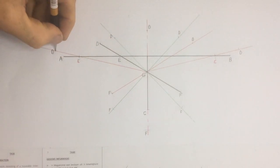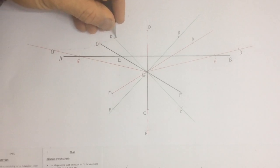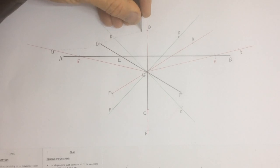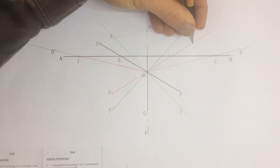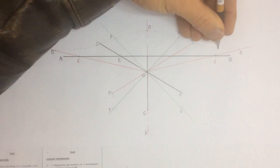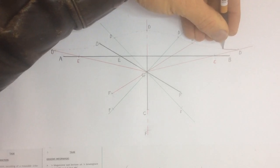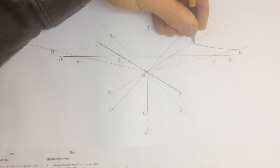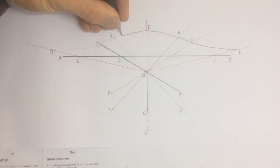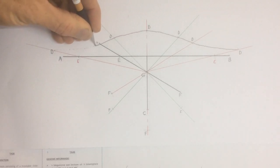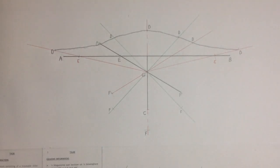Once I've got that, I can take my arc gently through those points, and then draw in that arc going through all of those points. There it is.